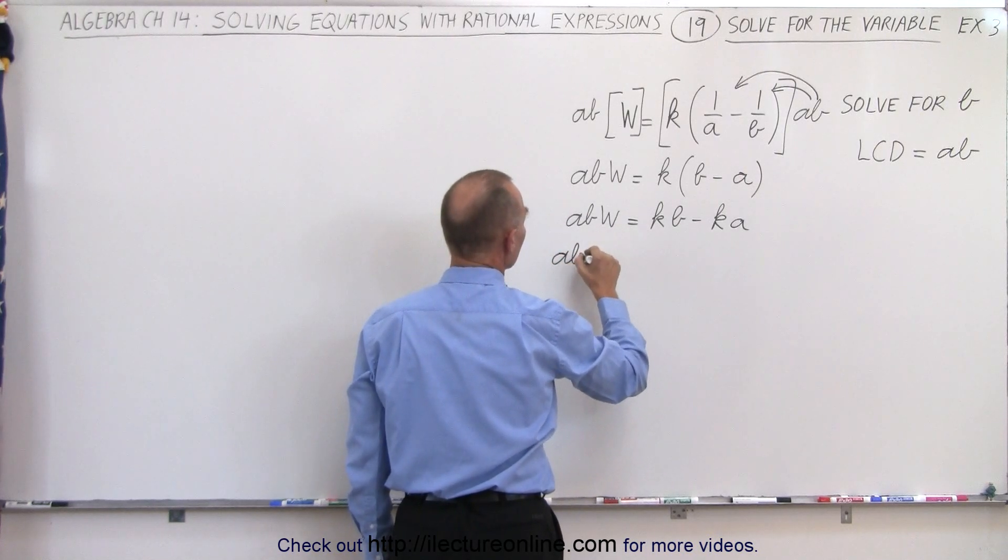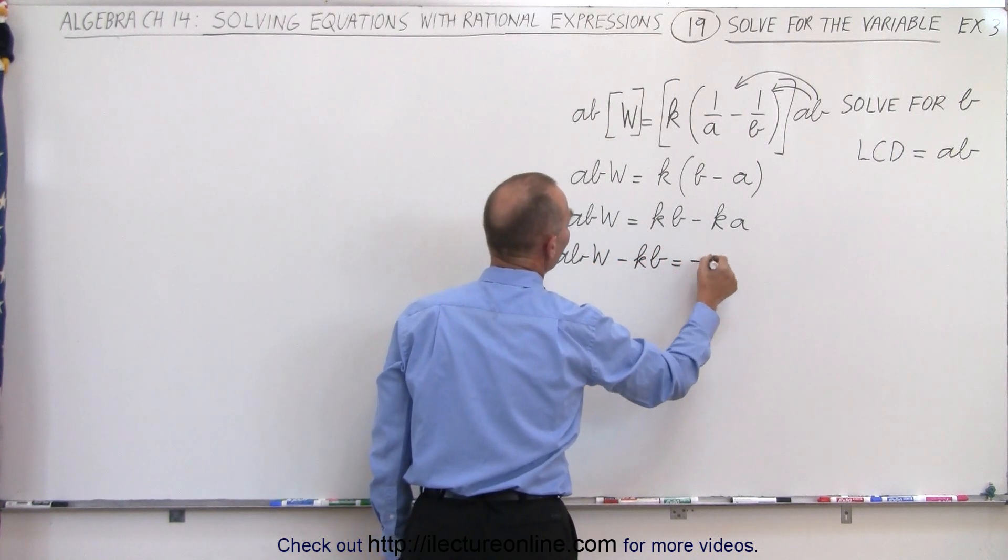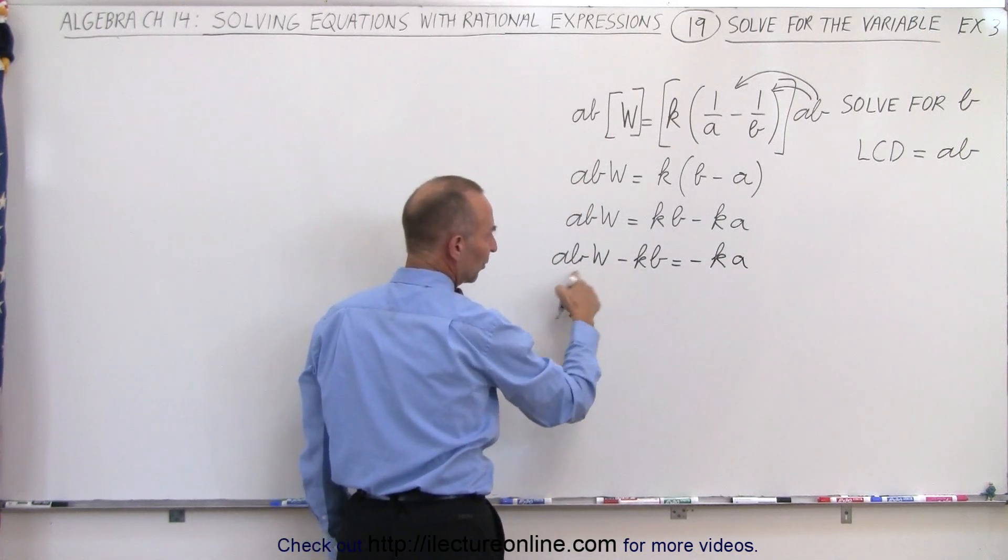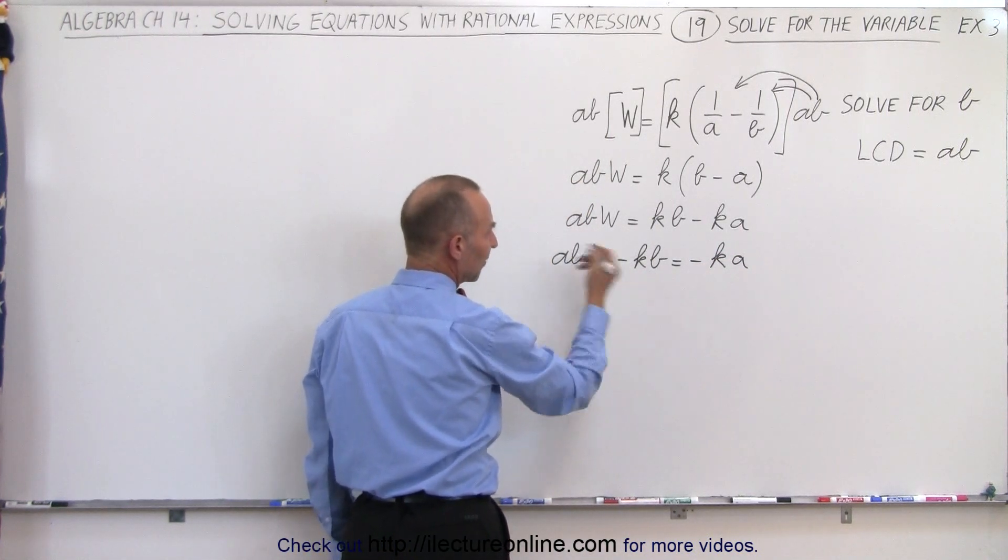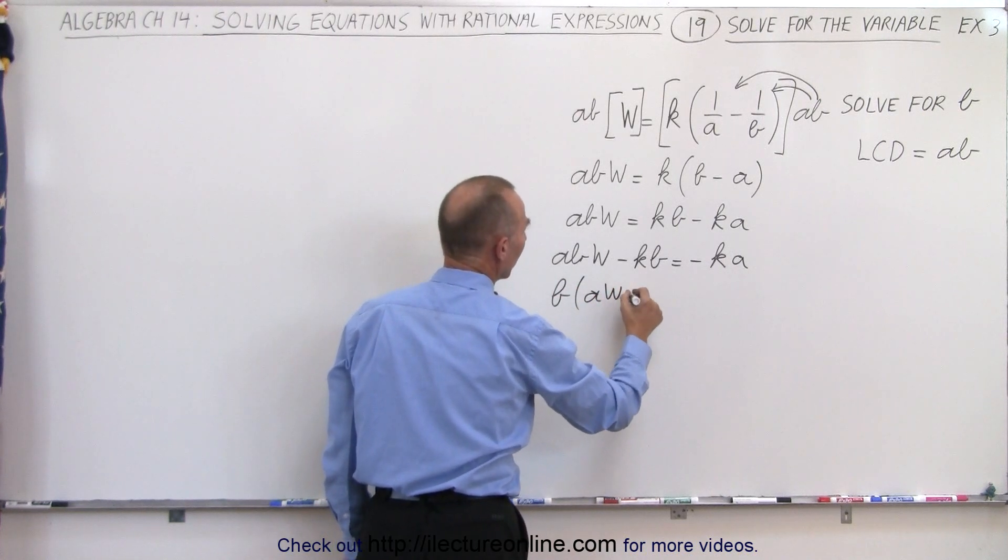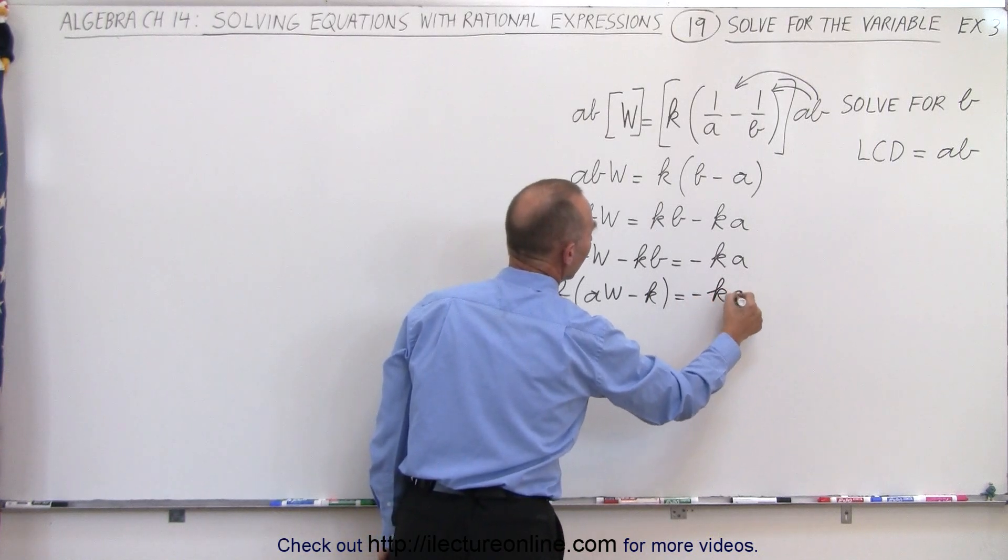So we have abw minus kb equals minus ka. Now notice we have two terms here that have b in it, so we can factor out a b. So b times aw minus k is equal to minus ka.